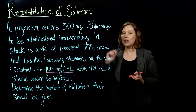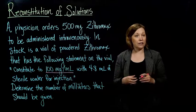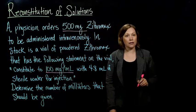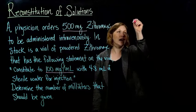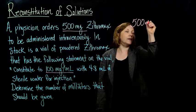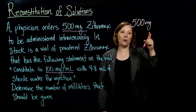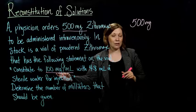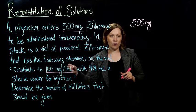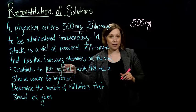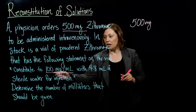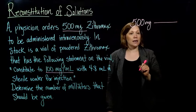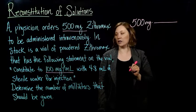We also know the ordered dose — the desired dose we want is 500 milligrams. We need to give 500 milligrams and multiply by some factor that will tell us how many milliliters to give, based on the ratio of the amount we have in stock. We have 100 milligrams per milliliter, so we're going to make a conversion factor out of that.